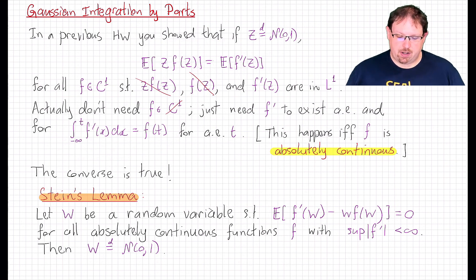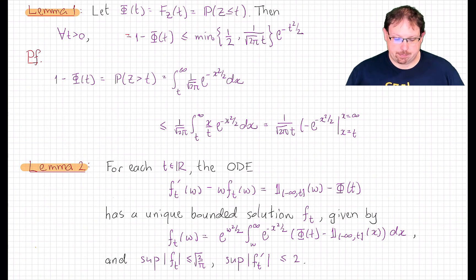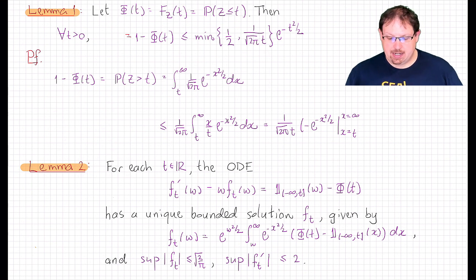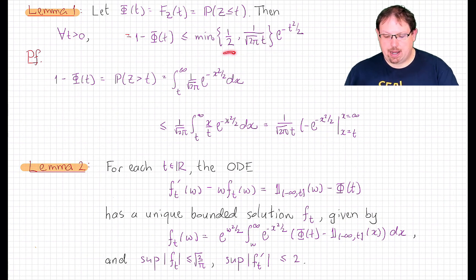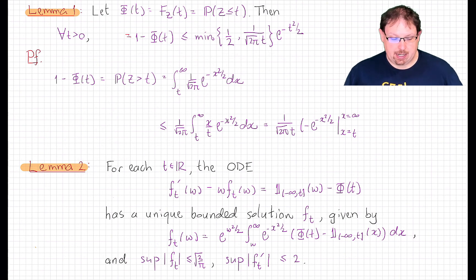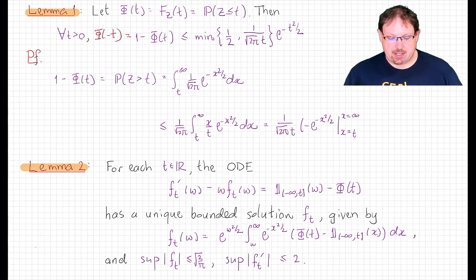To begin, we need the following standard Gaussian tail bound. Letting phi denote the CDF of the standard normal law, phi satisfies tail bounds even smaller than the Gaussian itself. 1 minus phi(t) is less than or equal to 1 over t times the Gaussian density itself, and also less than or equal to 1 half, whichever one of these is smaller. Since the Gaussian is symmetric, this is also the value of phi of minus t, and so we get the same absolute bounds on the negative side as well.